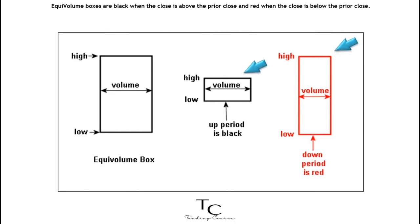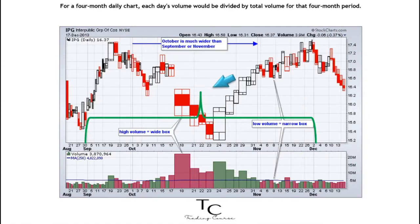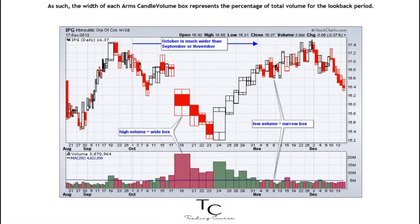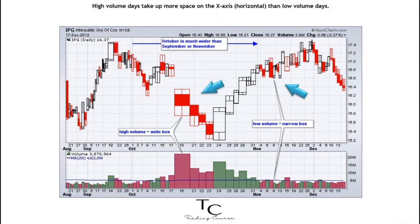Equi volume boxes are black when the close is above the prior close and red when the close is below the prior close. When calculating equi volume charts, note that volume is normalized to show it as a percentage of the lookback period. For a four-month daily chart, each day's volume would be divided by total volume for that four-month period. As such, the width of each Arms Candle Volume box represents the percentage of total volume for the lookback period.